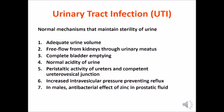There are various normal mechanisms that maintain the sterility of urine: adequate urine volume, free flow from kidneys through the urinary meters, complete bladder emptying, the normal acidity of urine, peristaltic activity of ureters, competent ureterovesical junction, increased intravesicular pressure preventing reflux, and in males, the antibacterial effect of zinc in prostatic fluid. Any disturbance in these factors, along with an attack of organisms, can cause urinary tract infection.